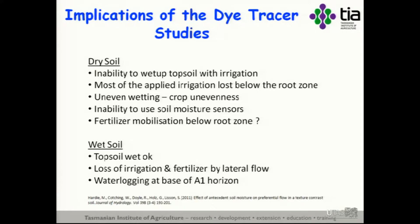When it was wet, we could wet up the topsoil — that was okay. But it was apparent that we were losing quite a bit of irrigation and quite possibly fertiliser and nutrients to lateral flow. And we had waterlogging at the base of the A1 horizon as shallow as 15 centimetres in the soil.